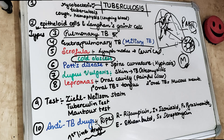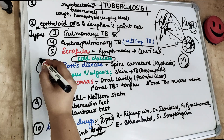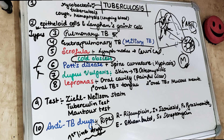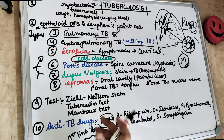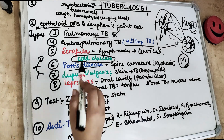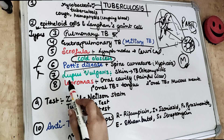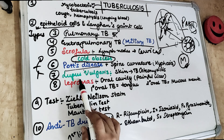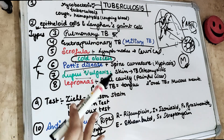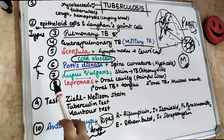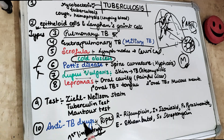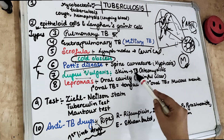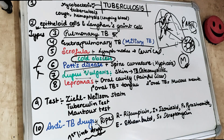When tuberculosis infection results in spinal curvature — kyphosis — we call it Pott's disease. Then we have lupus vulgaris, when primary TB affects the skin, and it can also involve the bone. When it involves the bone causing osteomyelitis, we call it TB osteomyelitis.